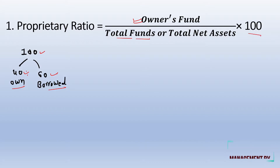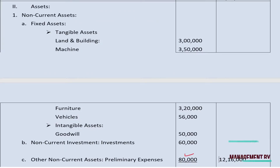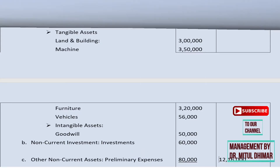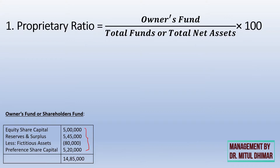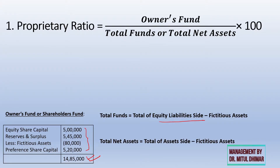The formula is owner's fund divided by total funds, multiplied by 100. Owner's fund means shareholders' fund. Checking the balance sheet, shareholders' fund includes equity share capital, preference share capital, reserves and surplus, less fictitious assets such as preliminary expenses on the asset side. The calculated owner's fund comes to 14,85,000. To find total funds, we take the total of the equity and liability side of the balance sheet and deduct fictitious assets.